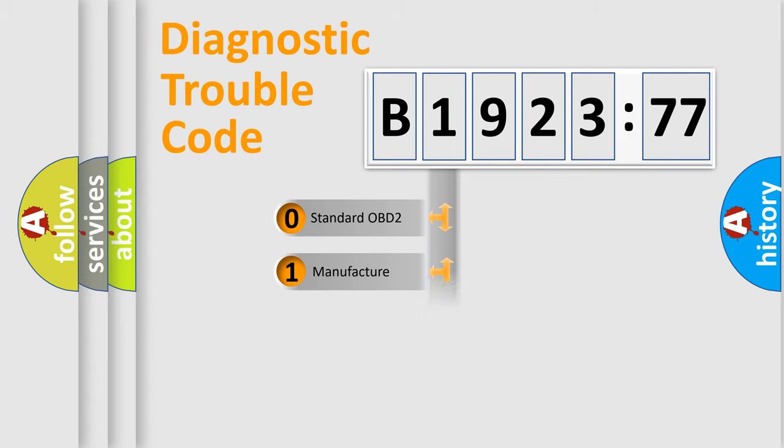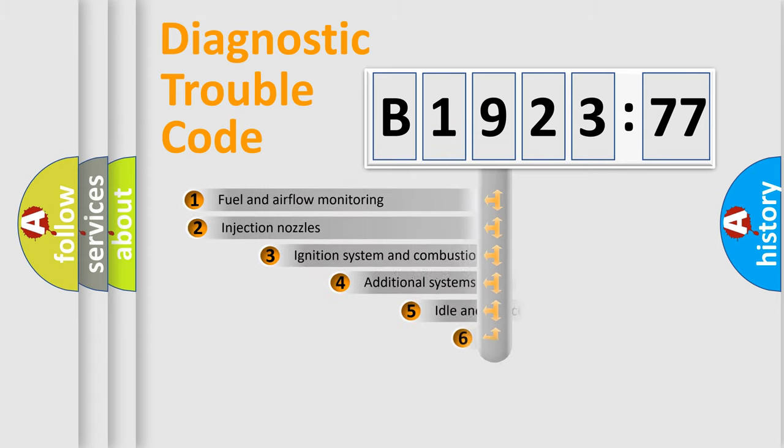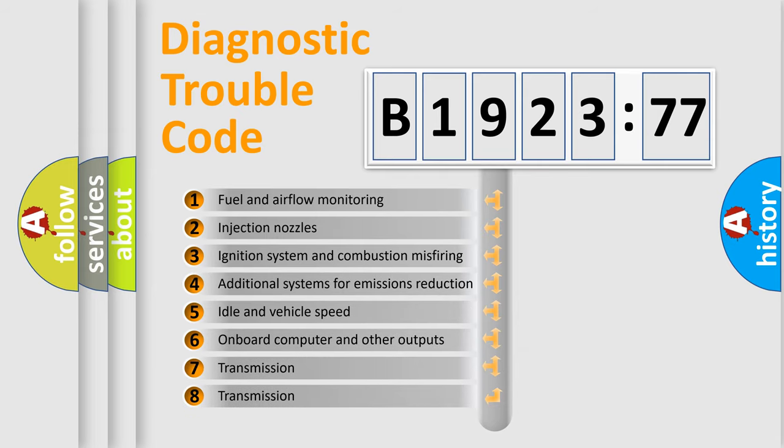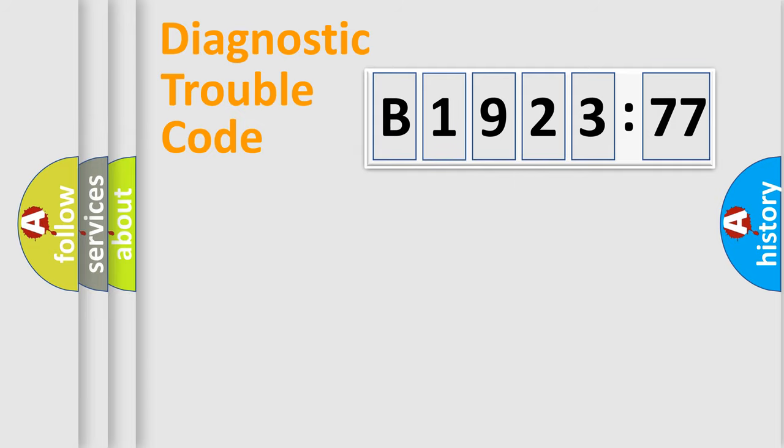If the second character is expressed as zero, it is a standardized error. In the case of numbers 1, 2, 3, it is a manufacturer-specific error. The third character specifies a subset of errors. The distribution shown is valid only for the standardized DTC code.